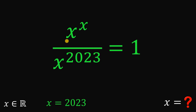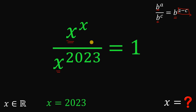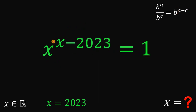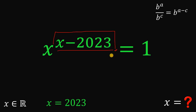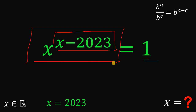Now let's use the laws of exponents on the left-hand side. When we have b raised to the power of a divided by b raised to the power of c — same base but different exponent — it equals b raised to the power of a minus c. Therefore, the left-hand side can be written as x raised to the power of x minus 2023, and the right-hand side is just 1.